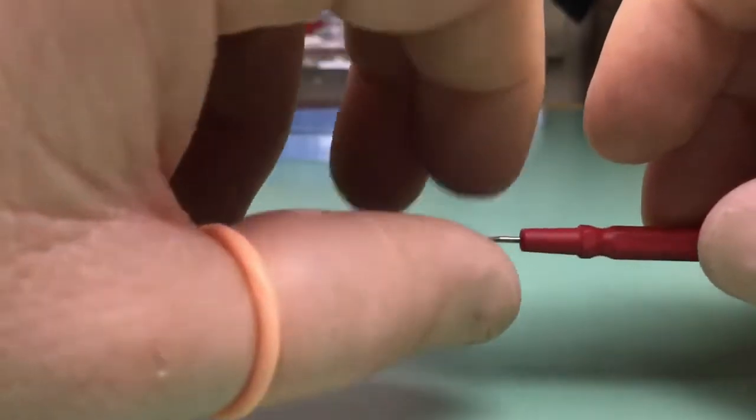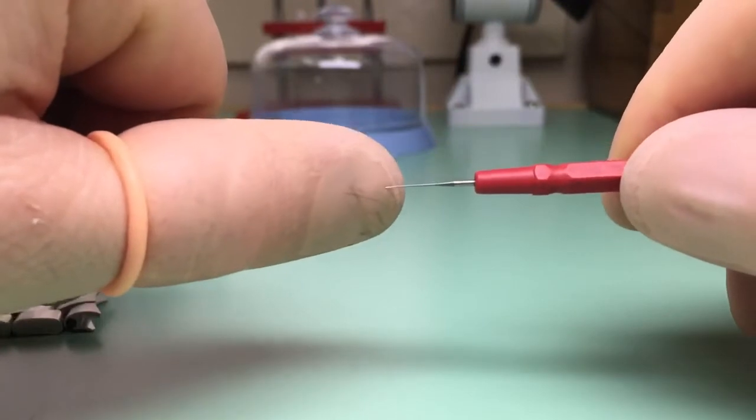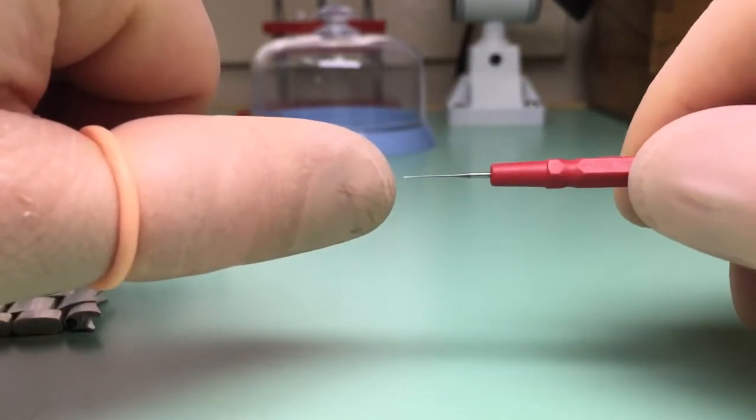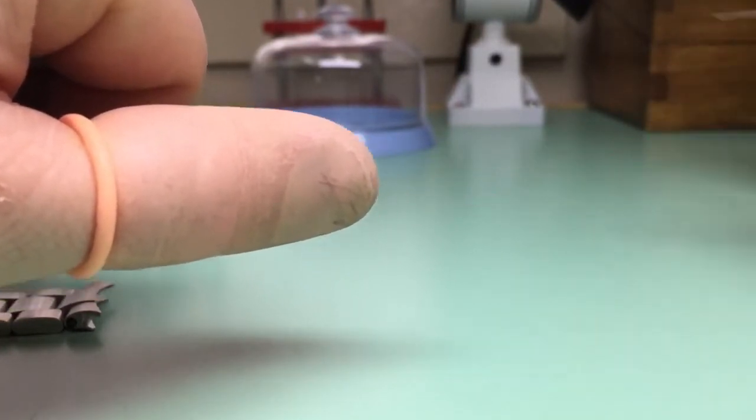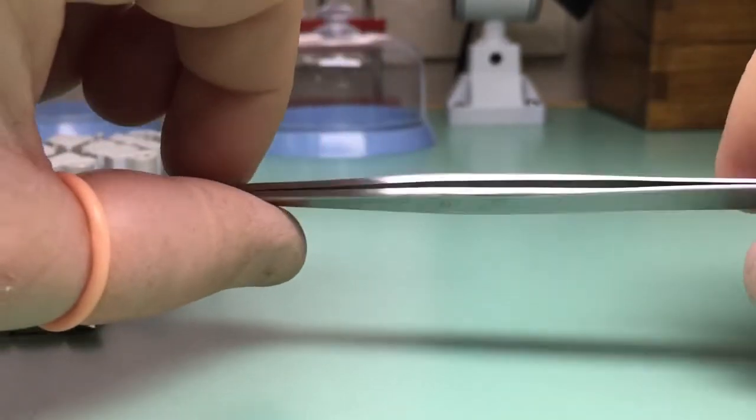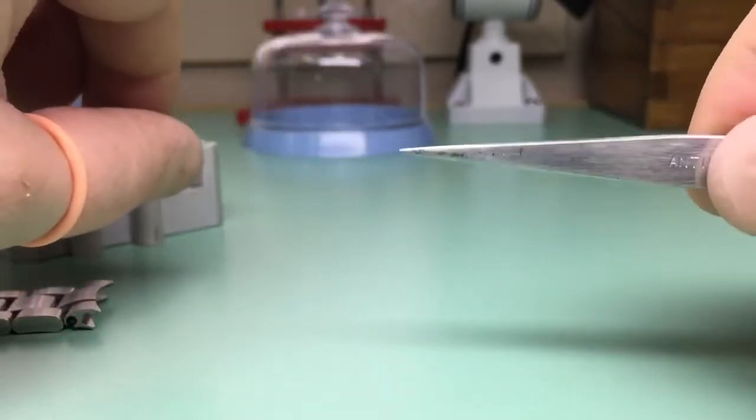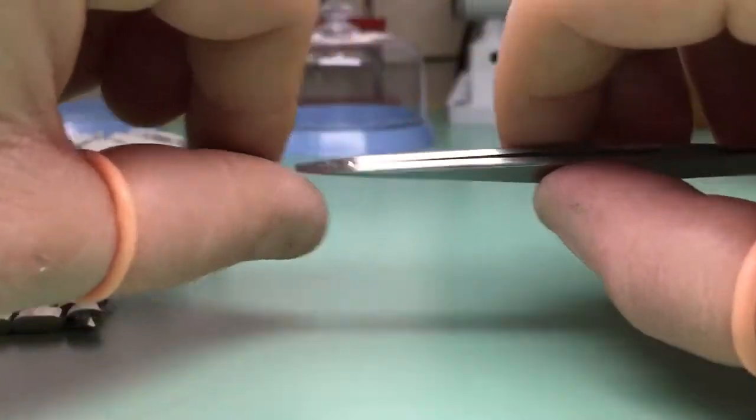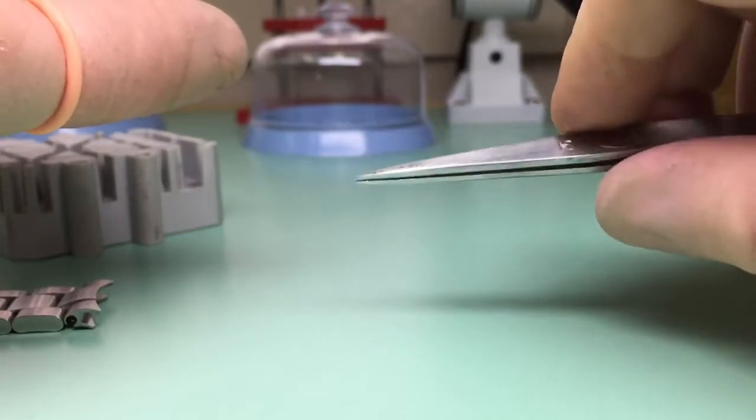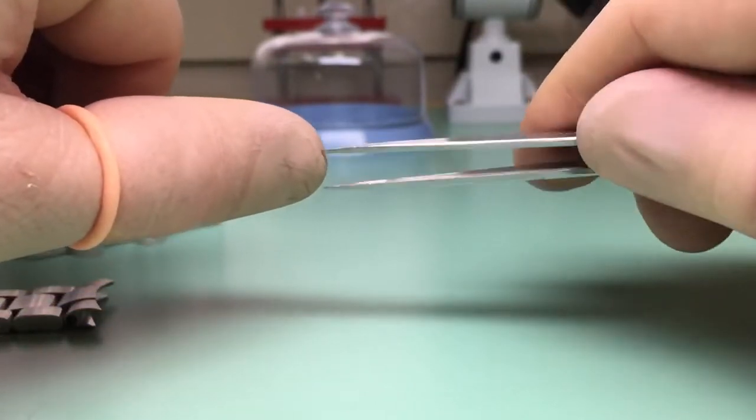We're also going to need something small—I use an oiler—just something with a pointed end to be able to install the Loctite on the thread itself. And finally it's always handy to have a pair of tweezers to pick up screws and things like that.